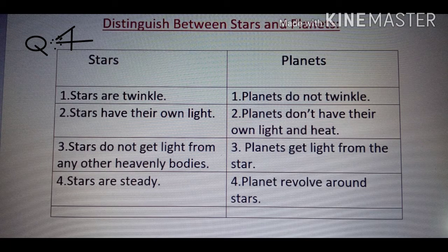Question Number 4 — Distinguish between stars and planets. First difference: Stars twinkle, planets do not twinkle. Second: Stars have their own light; planets do not have their own light and heat. Third: Stars do not get light from any other heavenly bodies; planets get light from the star. Fourth: Stars are steady and planets revolve around the star — they are unsteady.